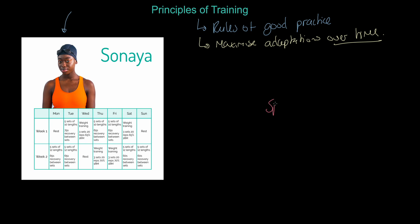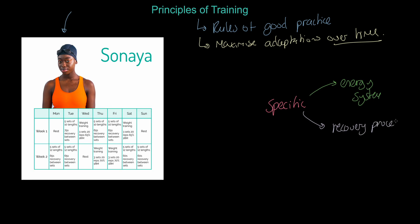The first principle is that training must be specific. We want the training to be specific to an energy system — that could be one of our three energy systems. We also want training to be specific to a recovery process, such as the time of recovery. Think about your PC system: phosphocreatine achieves 50% recovery in 30 seconds, for example.